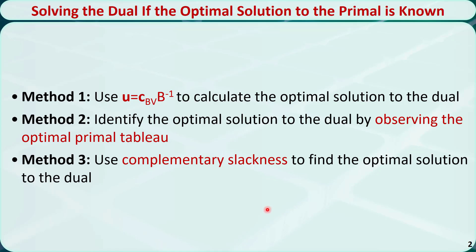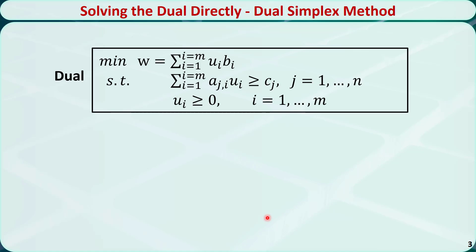What if we don't know the optimal solution to the primal? In that case, we cannot use these three methods. We can use another method called the dual simplex method to directly solve the dual problem in the standard form.